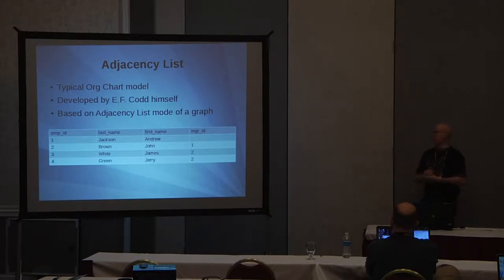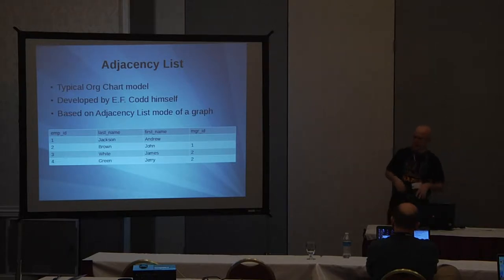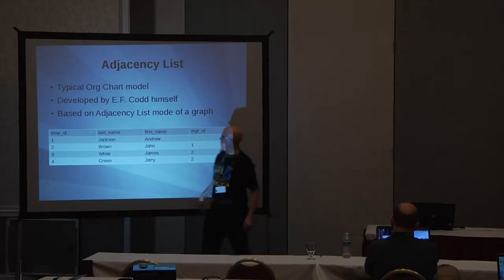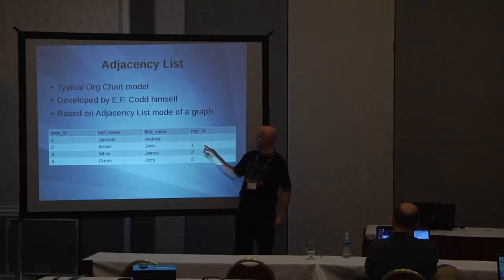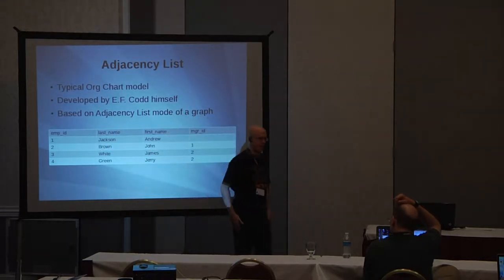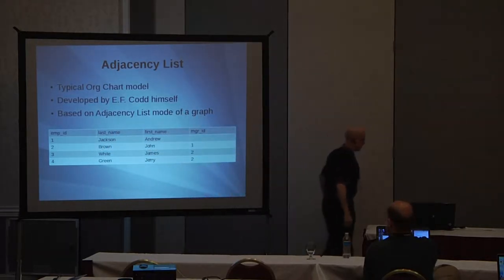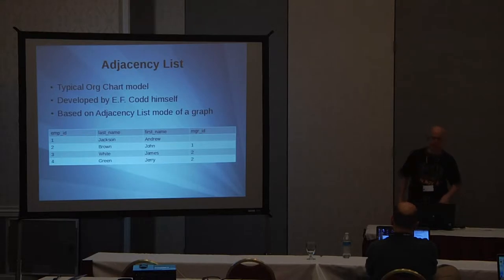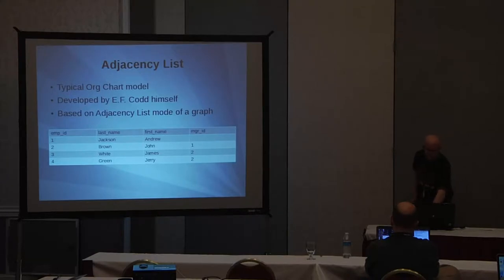The adjacency list is what's taught in your average DBA 110 class. It's literally just a recursive table: employee ID 1, and your manager ID refers back to the employee ID for whoever is the manager. That's pretty simple. If you're familiar with E.F. Codd — sort of the father of modern relational database systems — he actually wrote about this model.